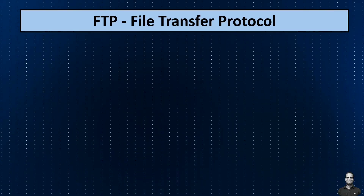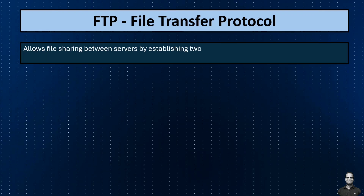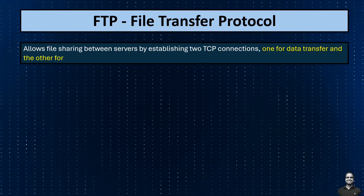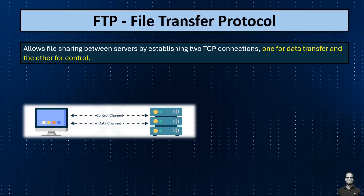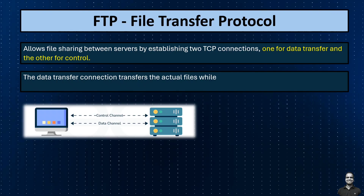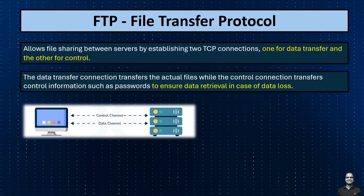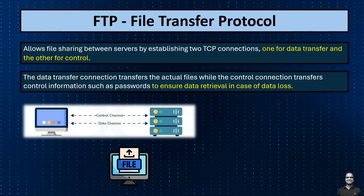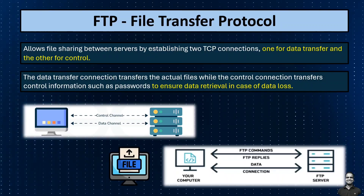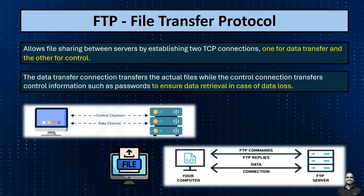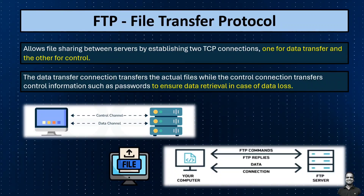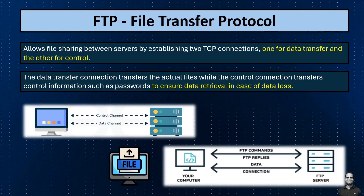Next, we have File Transfer Protocol, or FTP. It allows file sharing between servers by establishing two TCP connections — one for data transfer and one for control. The data transfer connection transfers the actual files, while the control connection transfers control information such as passwords to ensure data retrieval in case of data loss. For example, when you upload a file to a website using an FTP client, the client establishes two TCP connections with the server: one for sending commands and receiving responses, called the control connection, and another for transferring the actual file data, called the data connection, allowing for efficient and reliable file transfer.